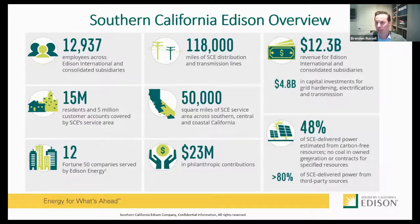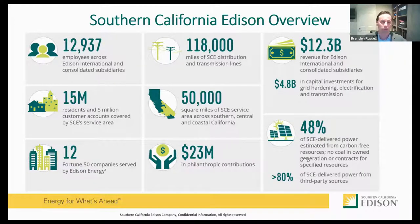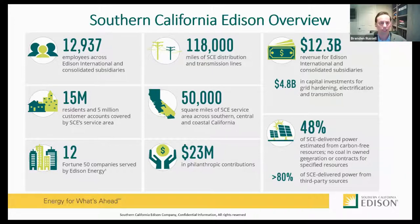Before I get into that, just a quick overview of Southern California Edison. We have about just shy of 13,000 employees. We service about 15 million customers in Southern California. We have about 118,000 miles of distribution transmission lines, and our service territory spans about 50,000 square miles. We currently serve customers where about 48% of our power delivered today is carbon free — a pretty significant achievement. We've made significant strides in the last decade to increase clean energy production and delivery. We invest about $4.8 billion in capital yearly, just on our grid in Southern California.